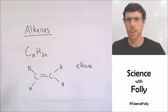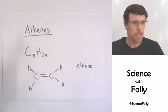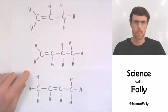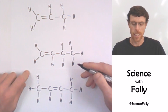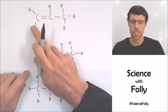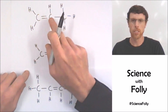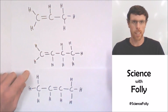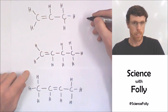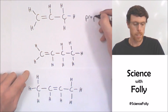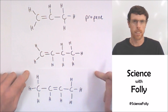Could you have methene? Think about it. Here are the next two alkenes in the series. We've got one, two, three carbons and a double bond — that's propene. Easy.